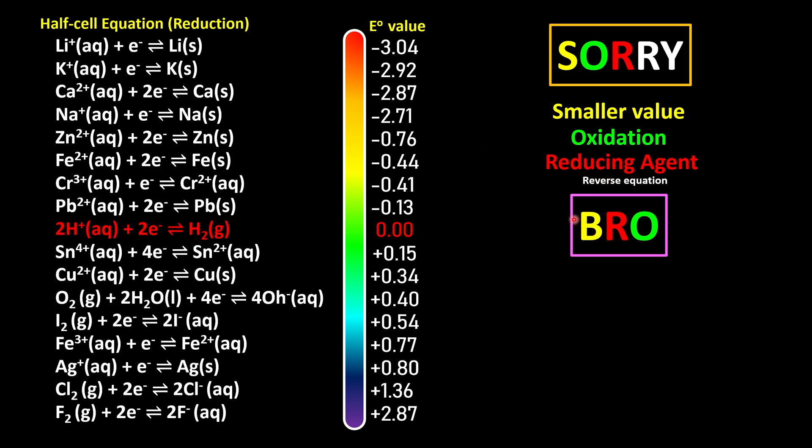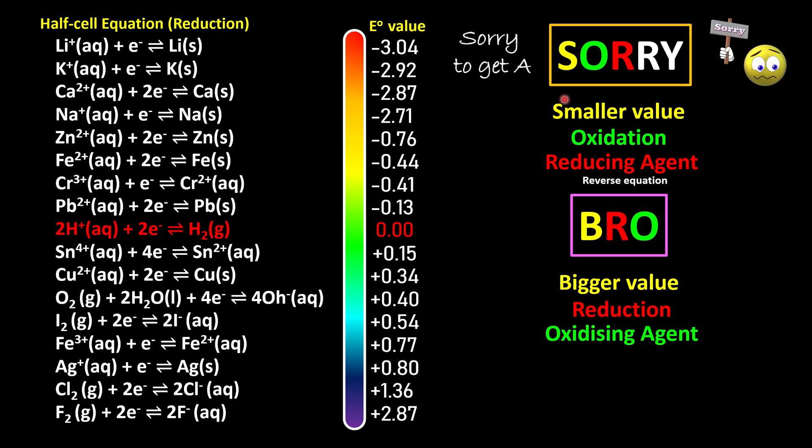Meanwhile, bro means whoever has a bigger E° value and which one is cathode. It's very easy. Whoever gets an A in the exam, please say sorry with your friends. Be humble. So sorry means anode.